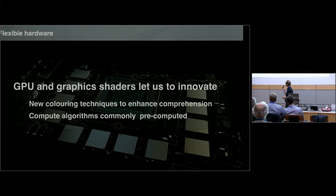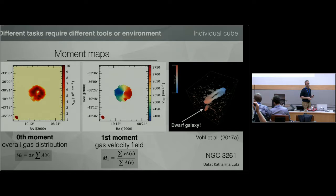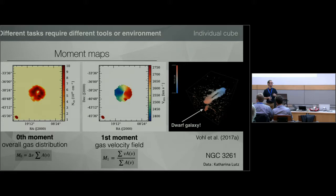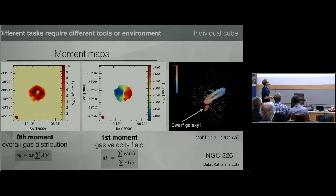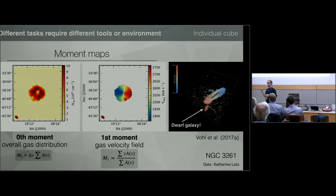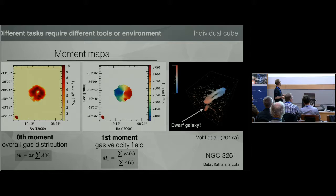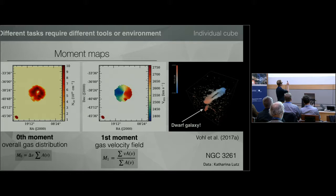The classical way to look at spectral cubes has been to work with 2D data. Even though we're working with 3D spectral cubes, the most common way is to compress them into 2D images using statistical moments — for example moment zero integrates over the line of sight to give an overall gas distribution image, moment one gives the gas velocity field, and so on. The issue is that once you've computed your static image you're stuck with it — you lose access to the raw data. If something is missed, well, too bad.